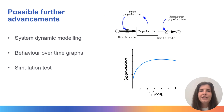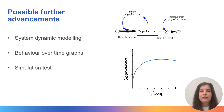Once you have your causal loop diagram, you can make further advancements to produce a systems dynamic model. To do this you would need systems modelling software, and you can associate data and equations to your variables and connections to produce the model.